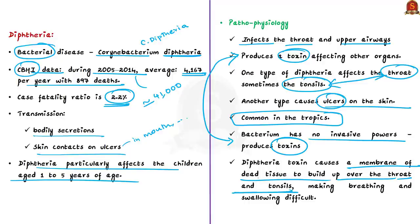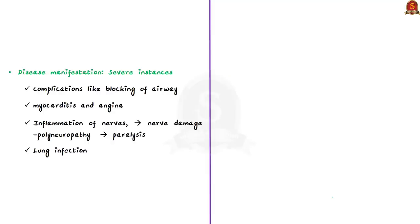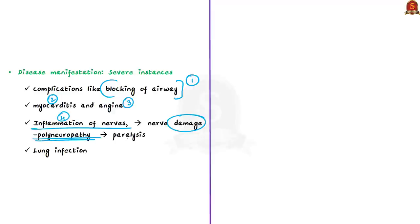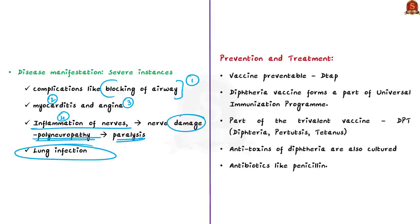The diphtheria toxin causes a membrane of dead tissue to build up over the throat and tonsils, making breathing and swallowing difficult. In more severe instances, complications include airway blockage, damage to the heart muscle (myocarditis), angina, inflammation of nerves (polyneuropathy), and paralysis. Lung infection, respiratory failure, or pneumonia is also common with diphtheria.